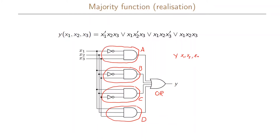A more compact and minimized expression for the majority function is: x1 x2 OR x1 x3 OR x2 x3. This uses fewer terms and fewer gates than the full sum-of-products expansion. We will call this a minimized function, and exactly how to reach this minimized expression is something we will return to later in the course.